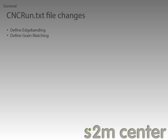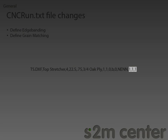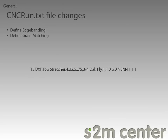The last change that was made is the ability to define Grain Matching. In a typical Part Line, we can see that a Grain Matching Group, X Position, and Y Position have been defined. For more information about these values and how they relate to the part, please take a moment to look through your S2M Center help files.